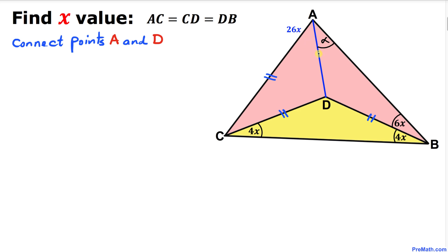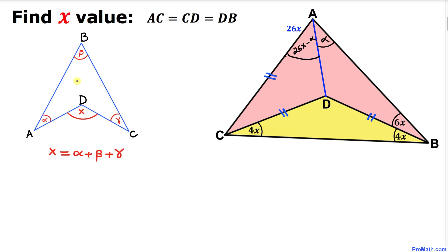Now let's focus on this quadrilateral ABCD over here and we know the fact that this angle X is always equal to this angle alpha, this angle beta and this angle gamma as you can see over here.